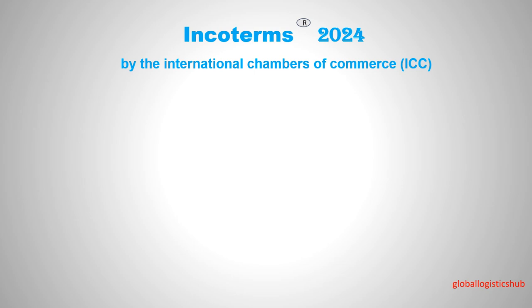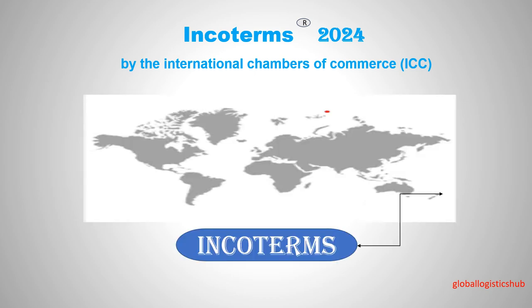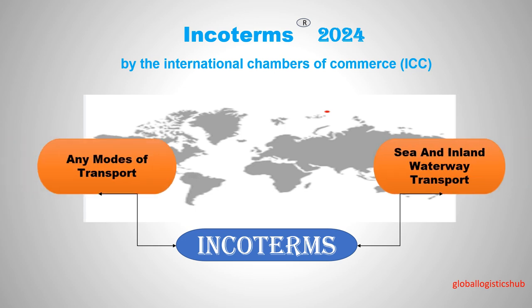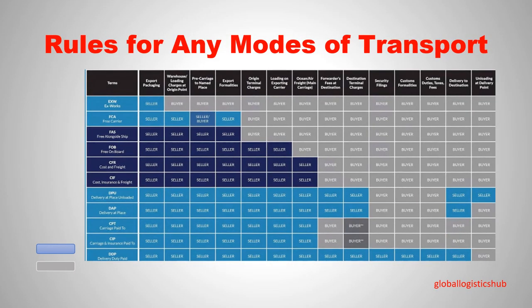The ICC grouped Incoterms 2024 into two categories: number one, rules for any mode of transport; number two, rules for sea and inland waterways transport. We have created an easy-to-understand chart that displays Incoterms 2024. The left side of the chart displays the different types of Incoterms from top to bottom. The top side displays the different obligations and charges, showing which are covered by the seller and which by the buyer. Blue points to the seller and gray points to the buyer.